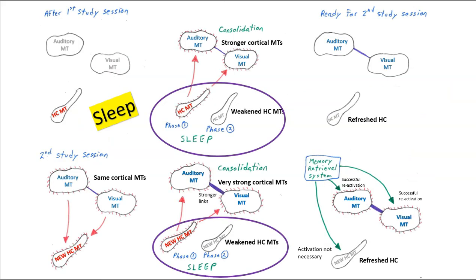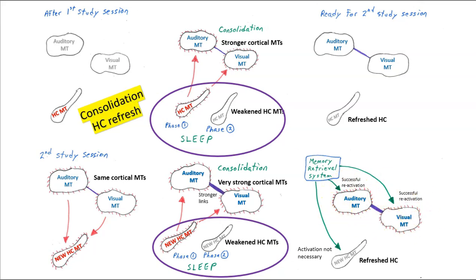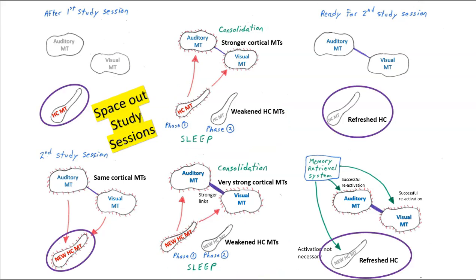Of course, we want to get good sleep. It's during sleep when we do important memory processing — consolidation, using hippocampal memory traces to strengthen cortical memory traces, and then refreshing the hippocampus for new learning. If we have multiple study sessions separated by sleep, we can just build and build strong cortical memory traces. Sleep is doing two important things: consolidation and refreshing the hippocampus. By spacing out our study sessions, we get the benefit of sleep in between.